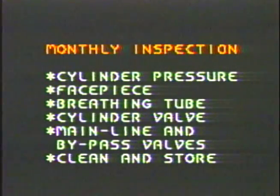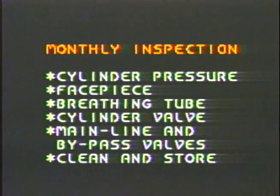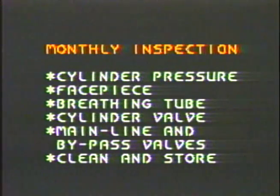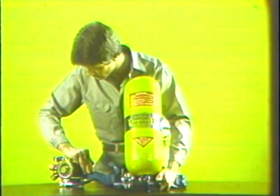In addition to routine inspections and inspections after each use, a more thorough examination and testing procedure must be performed monthly by trained personnel. This monthly check covers cylinders, valves, connections, and hoses for air tightness. The operation of the regulator valves must be tested, and the apparatus cleaned, sanitized, and stored. Trained personnel can test for air leaks between the cylinder and the regulator outlet by observing changes in gauge pressure.